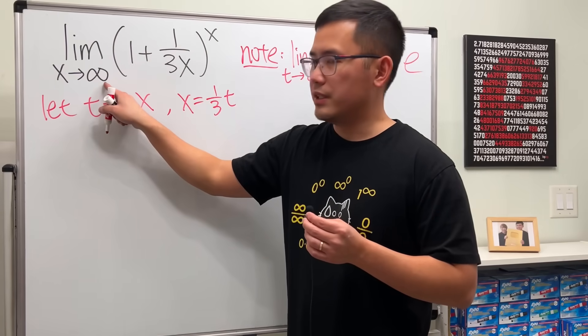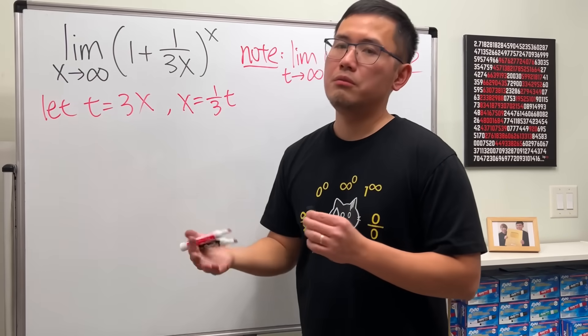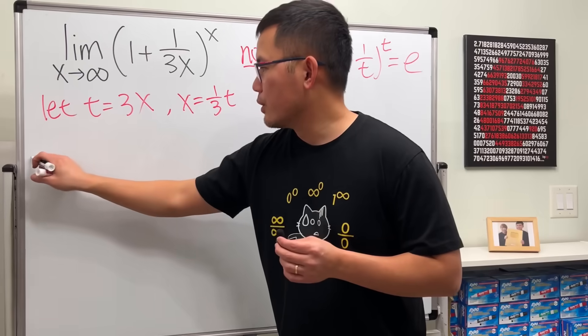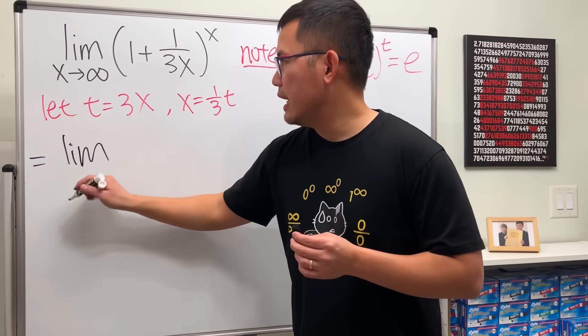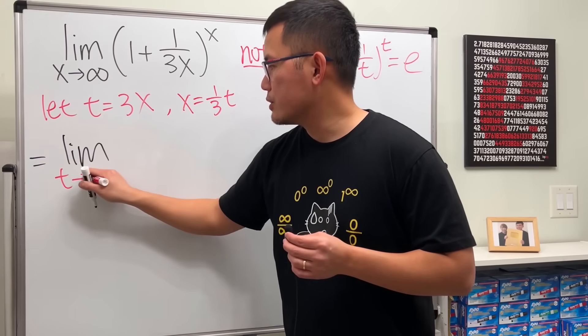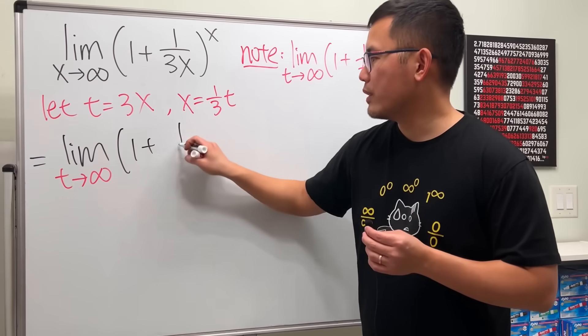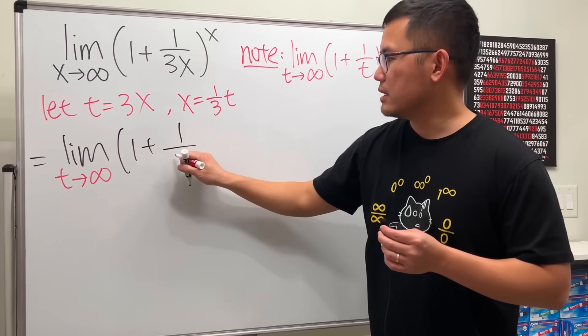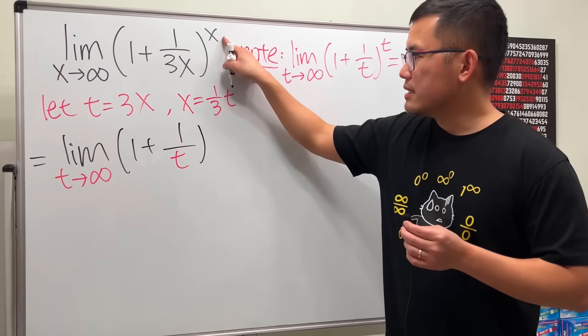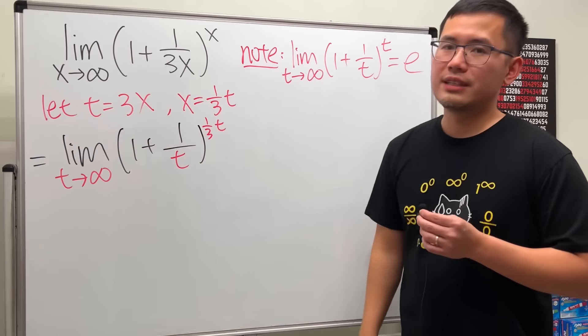And notice, as x goes to infinity, 3 times infinity is infinity. So this is the limit as t goes to infinity. And we have 1 plus 1 over t. And then the x is 1 over 3t.